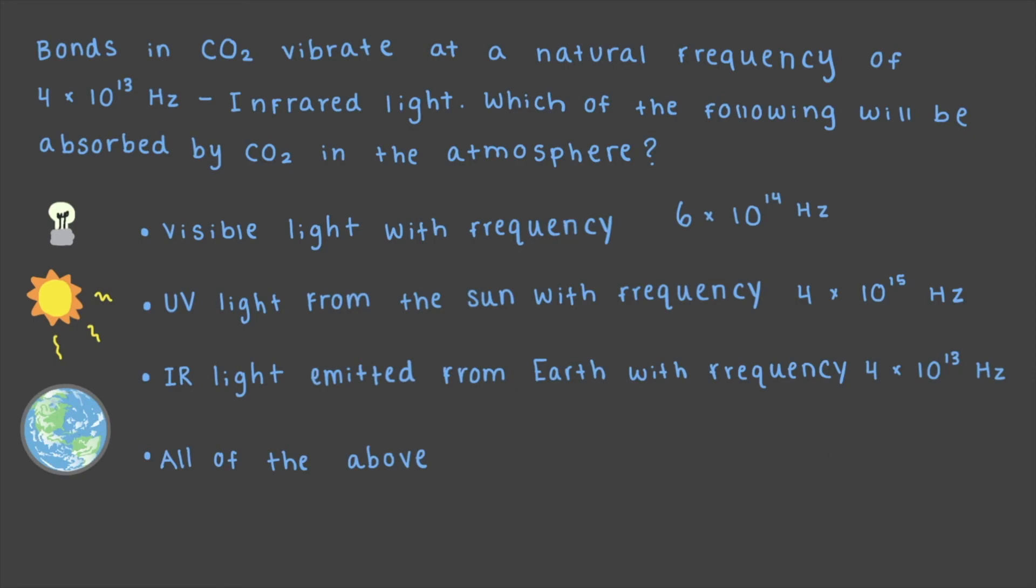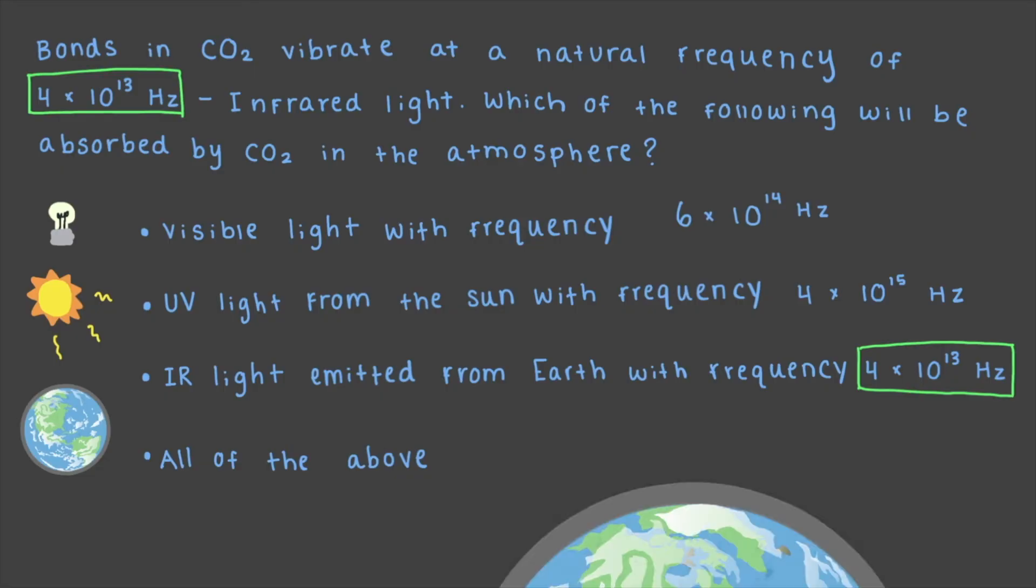That's right, if the frequency of light, in this case infrared light, being emitted from earth is equal to the natural frequency of the CO2, 4 times 10 to the 13 hertz, then the light is absorbed. This is why CO2 is called a greenhouse gas. It is responsible for heating up the atmosphere by absorbing infrared light from the earth.